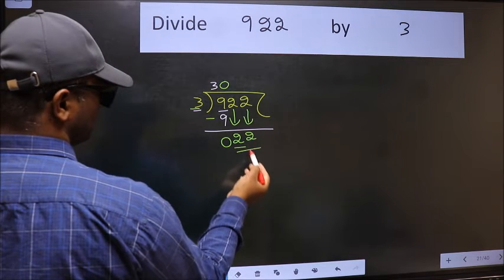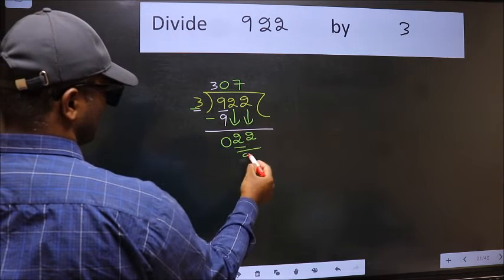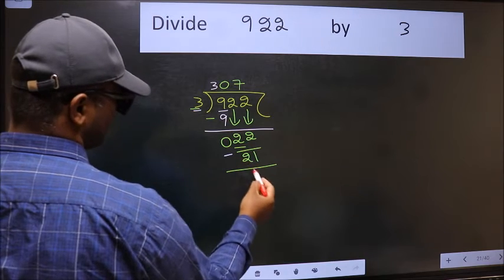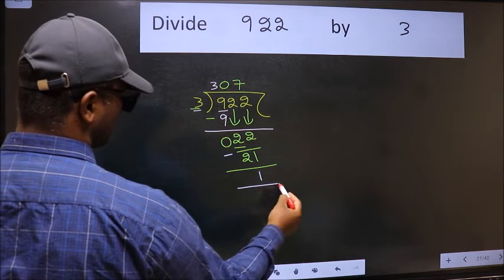Now 22. A number close to 22 in 3 table is 3×7=21. Now we should subtract. We get 1. No more numbers to bring it down. So we stop here.